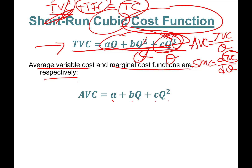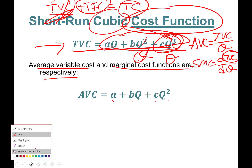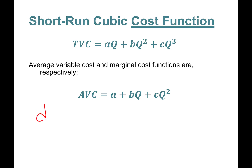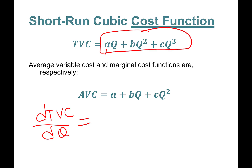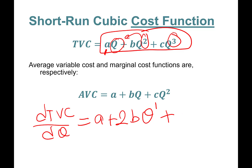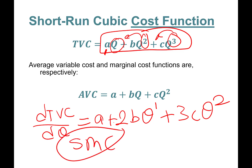Short-run marginal cost is the first derivative of total variable cost with respect to quantity. Taking the derivative: the derivative of a·q is a, the derivative of b·q² brings the 2 out front giving 2b·q, and the derivative of c·q³ gives 3c·q squared. So SRMC equals a plus 2b·q plus 3c·q².